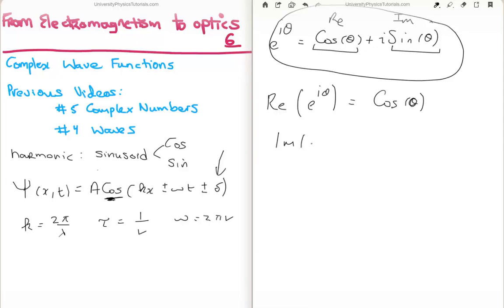Similarly, if I ask for the imaginary component, I'm simply going to get sine of θ. So both of these are harmonic functions. What this means is I can actually use my complex representation and use e^(iθ), provided I know that when I actually want to do some calculations, I must either take the real component or I must take the imaginary component, and not both.